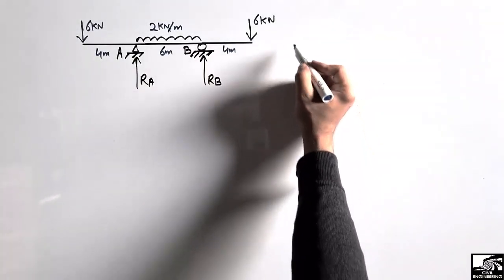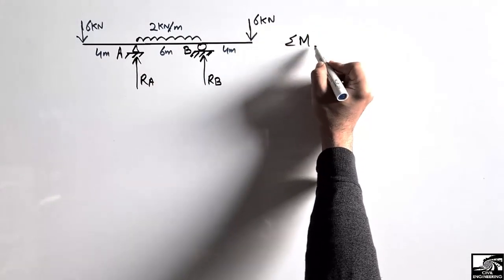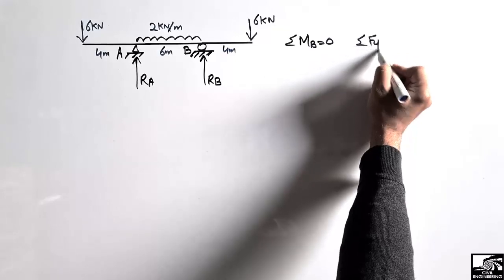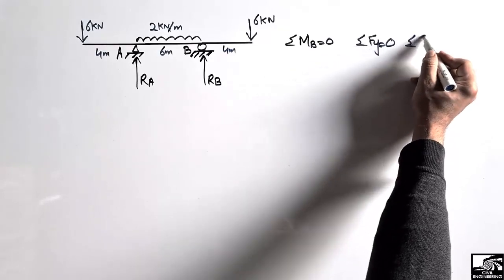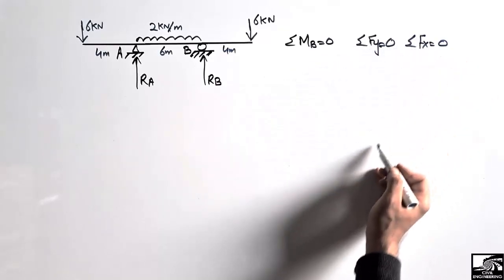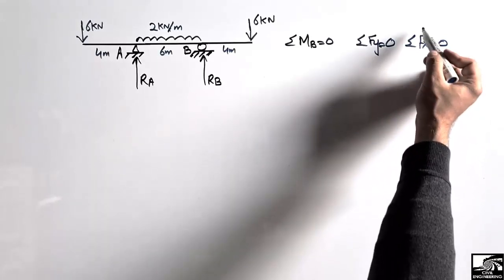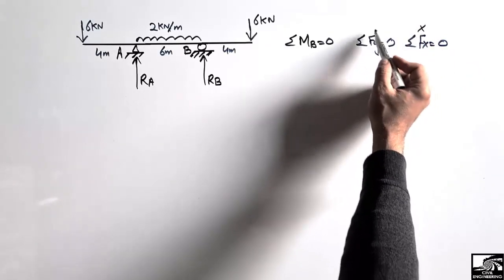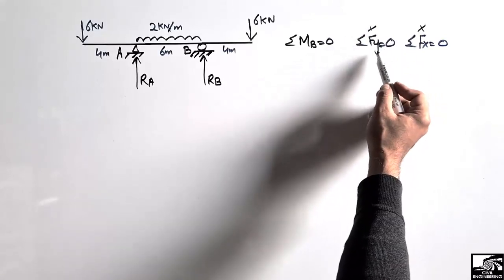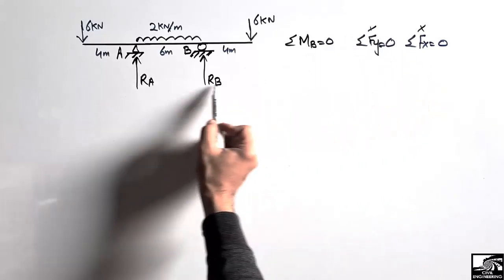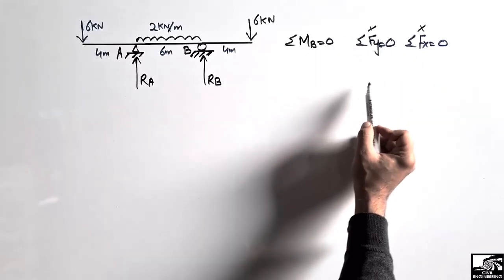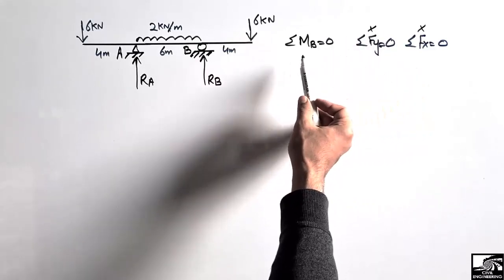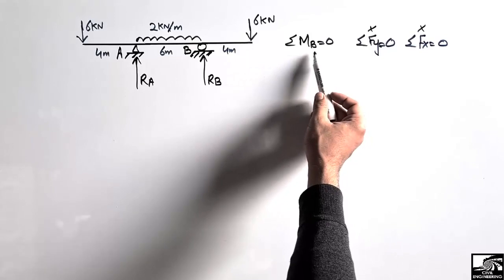To find the reactions, we use equilibrium equations: summation of moments at any point equals zero, or summation of vertical forces equals zero. We cannot use the horizontal force equation since there are no horizontal forces. We also cannot use the vertical force equation directly because we have two unknowns, so we use the moment equation first.